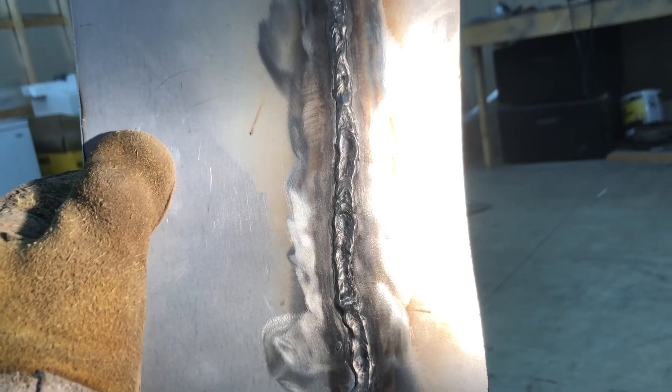If all you have is a stick machine and you need to weld on some thin stuff, you can do it for sure. You'll have to do it downhill because uphill will be pretty much impossible with a stick unless you get some little bitty rods. This is 3/32.